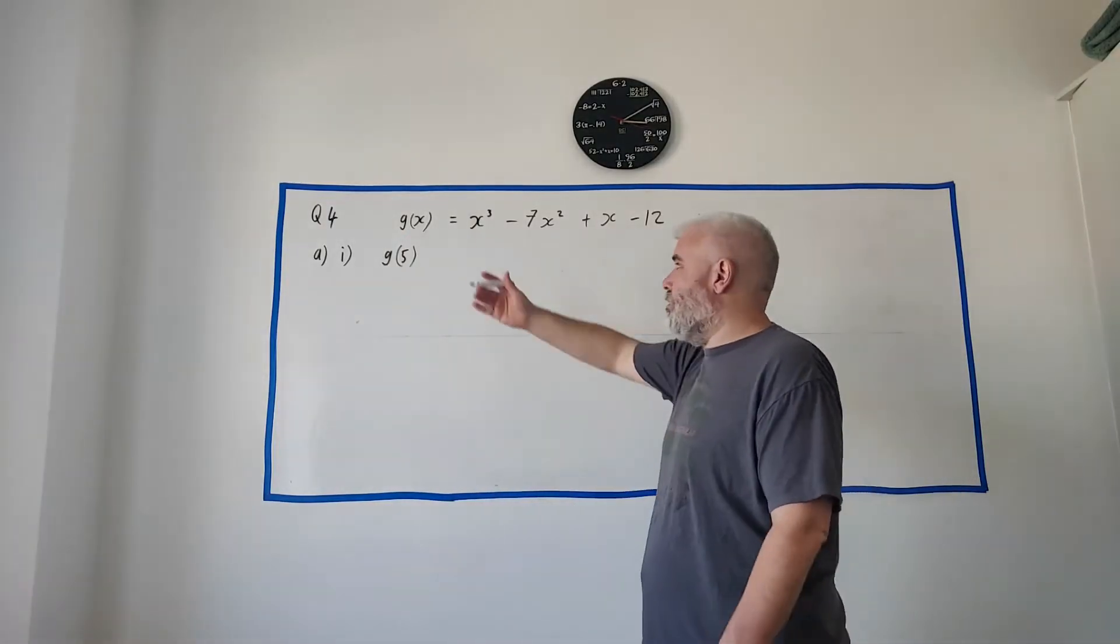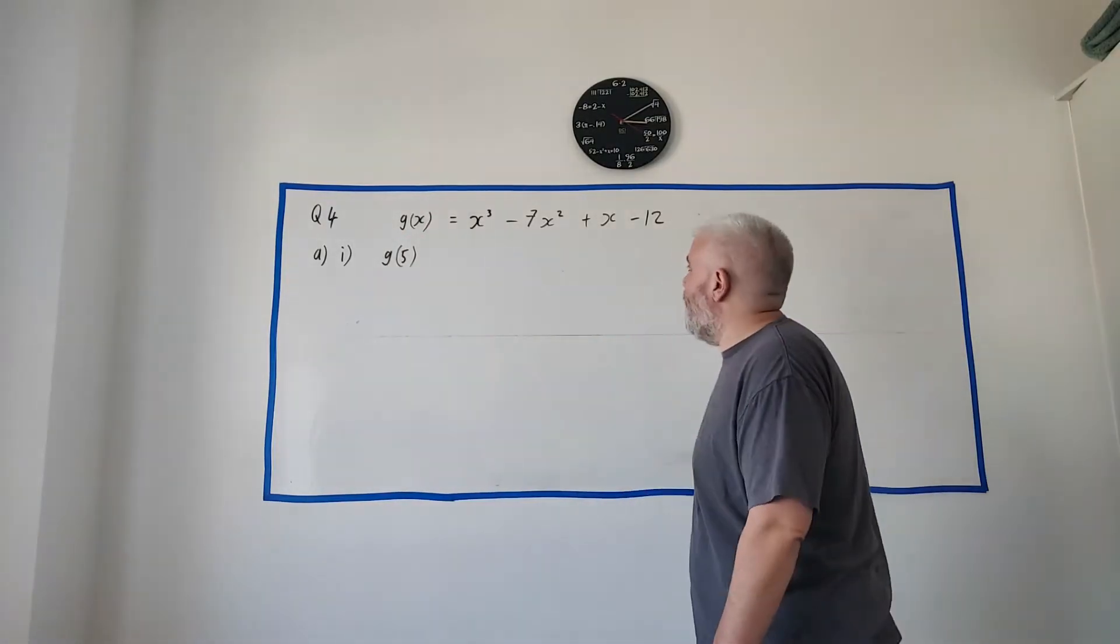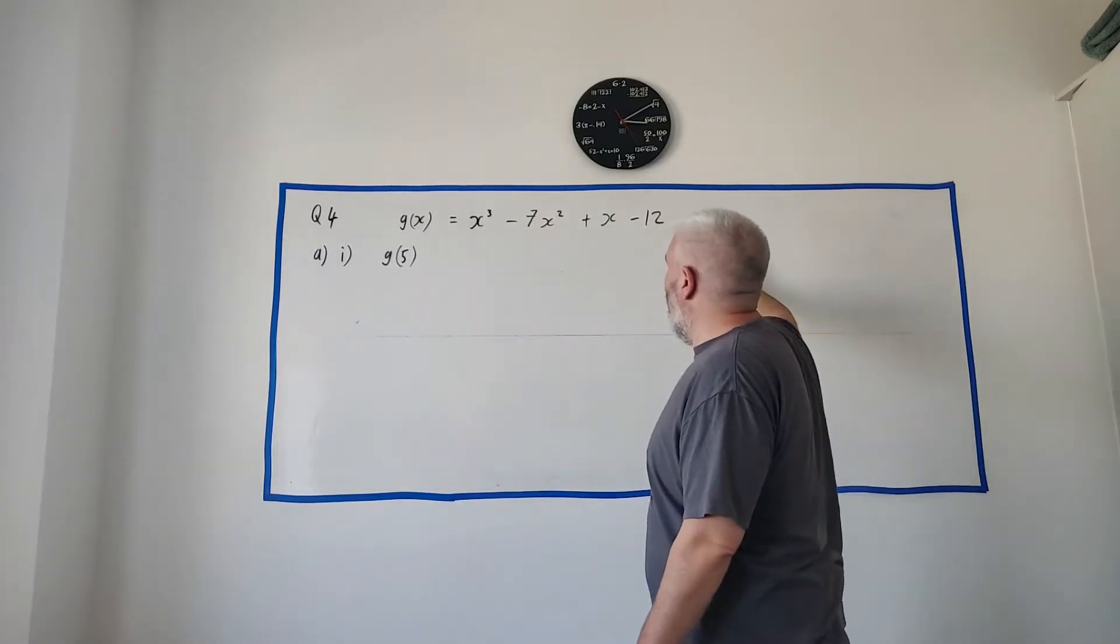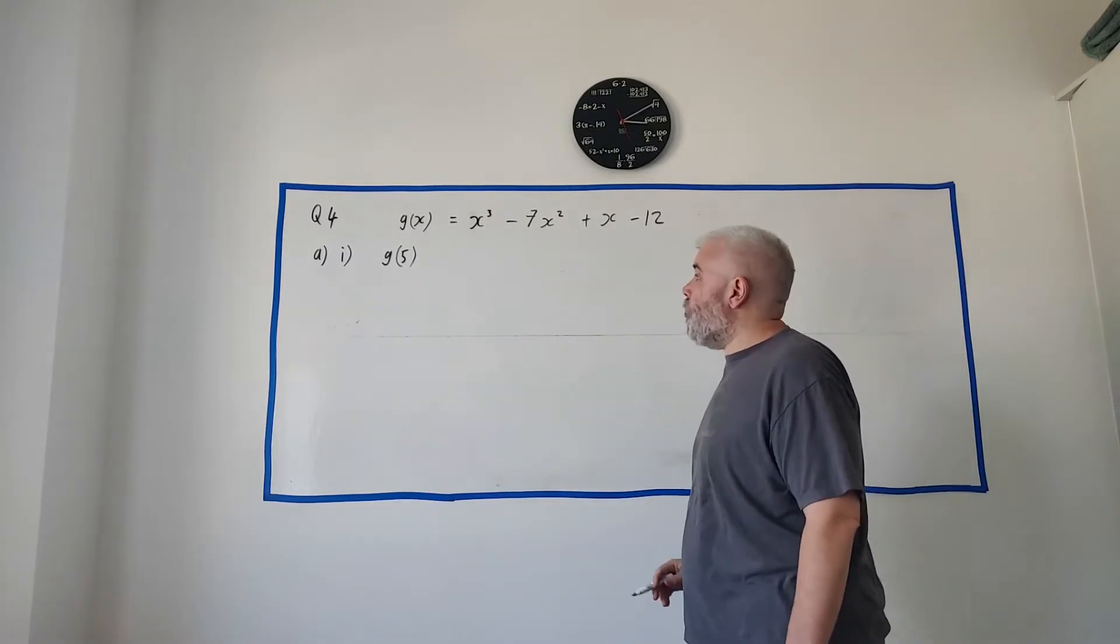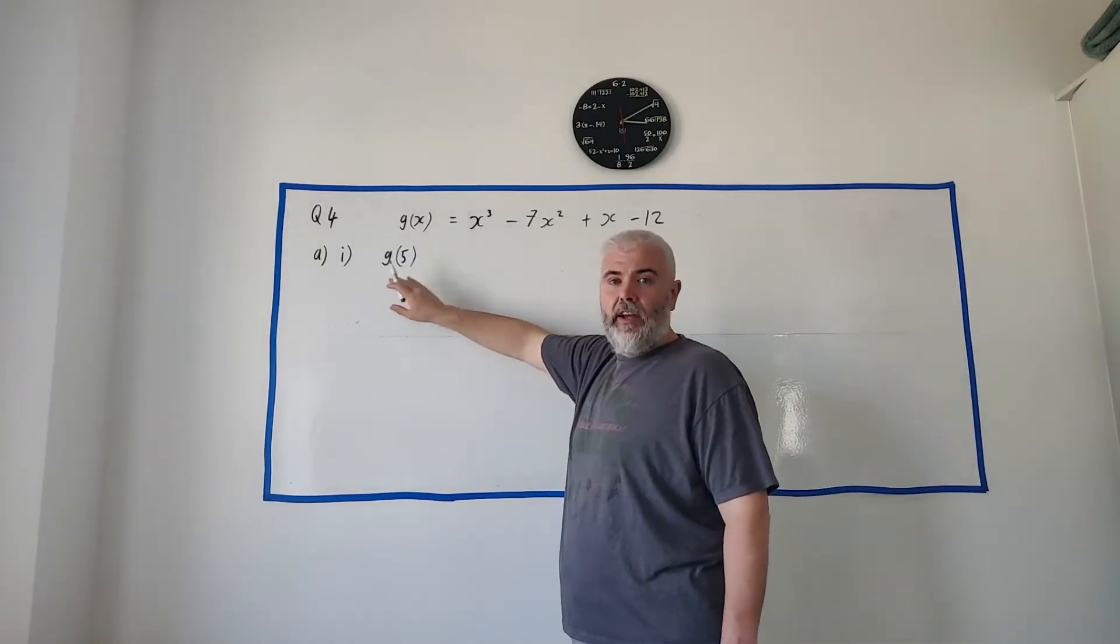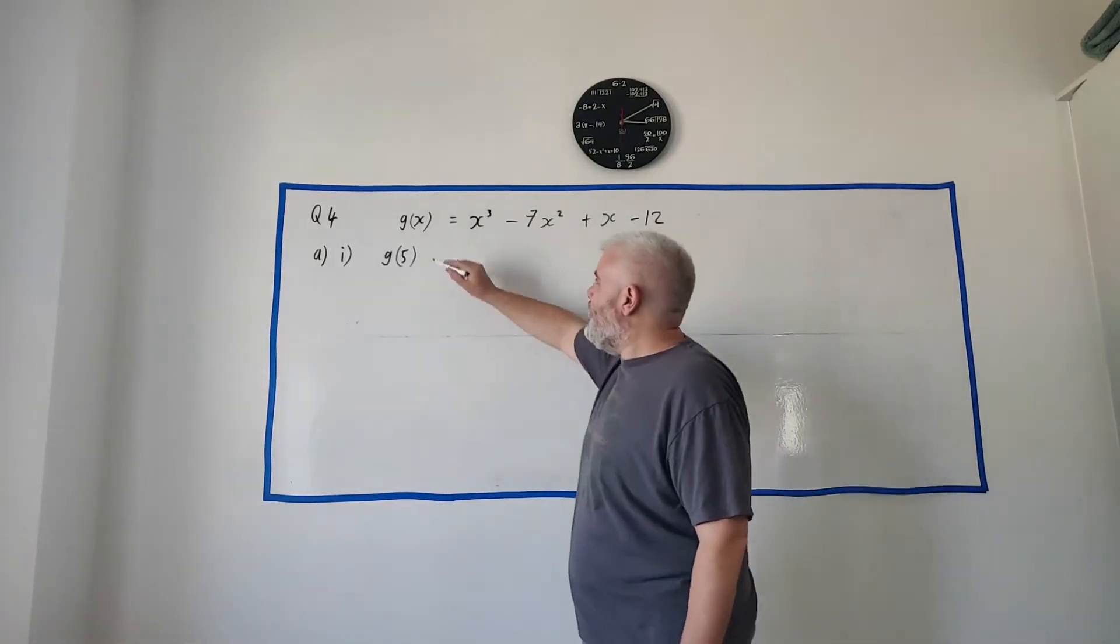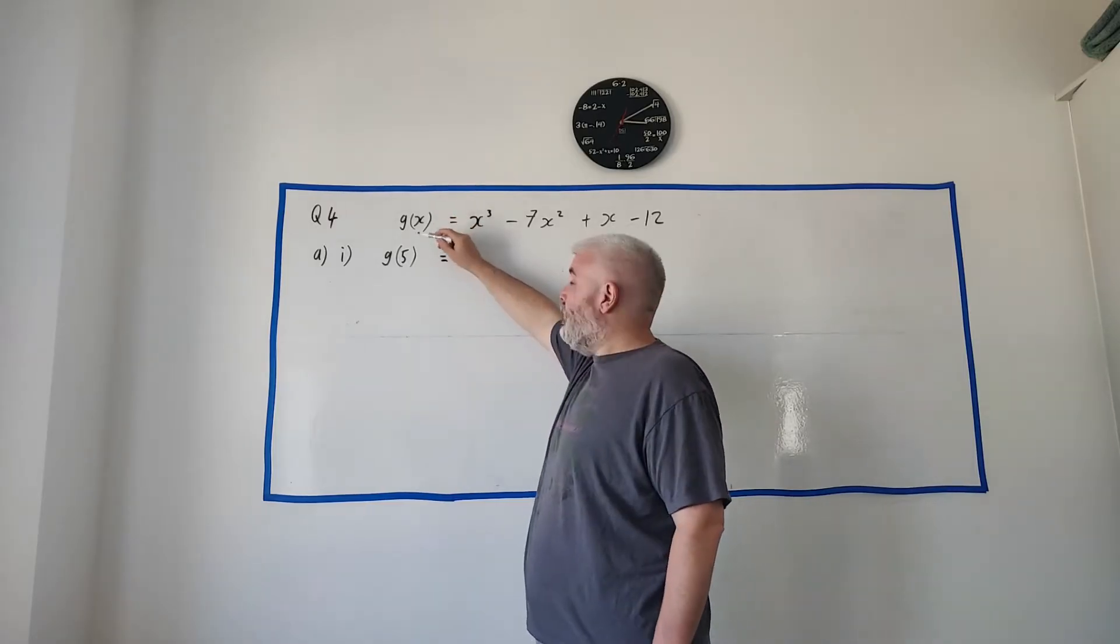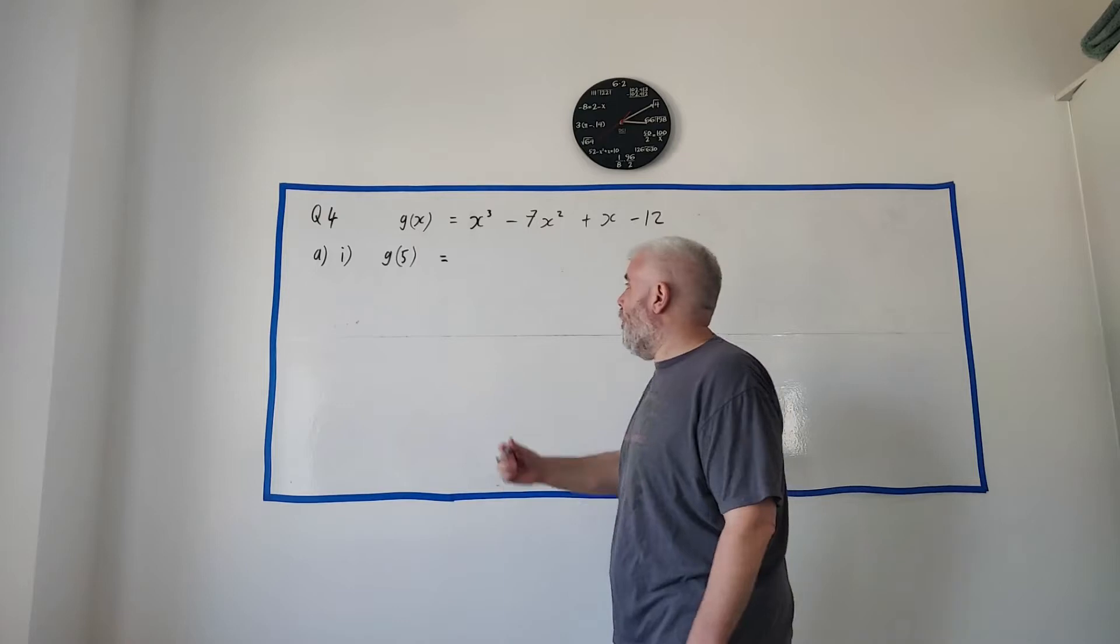You often see F, but you see G and H quite regularly as well. So this function, G(x), is equal to all of this. And they want to find G(5). And they do this very commonly. Basically, all you have to do to do this is, everywhere you see an x, put in a 5. That's all.